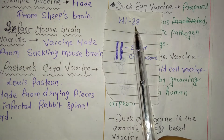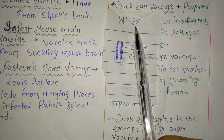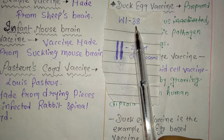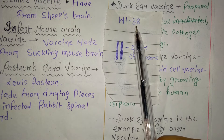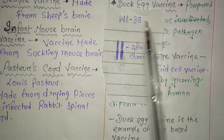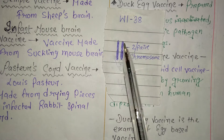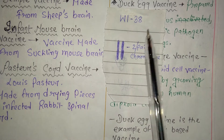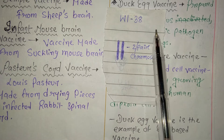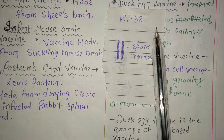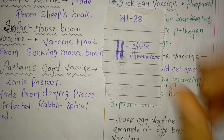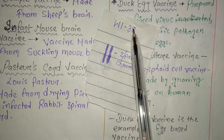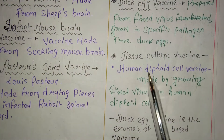WI-38 is a cell from a female fetus which was aborted in the third month of pregnancy. Suppose a woman is pregnant and after three months she gets an abortion due to any cause — and the child is female. So WI-38 comes from a female fetus.